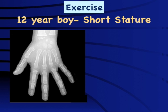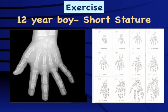Exercise one: a 12-year-old boy presenting with short stature. Since he is 12, we look at the epiphyses of the smaller bones, and they are very small. Looking at the carpal bones, only four have appeared and there is no ulnar epiphysis — giving a bone age of approximately 4.5 years. This indicates a very pathological cause, possibly hypothyroidism or growth hormone deficiency.